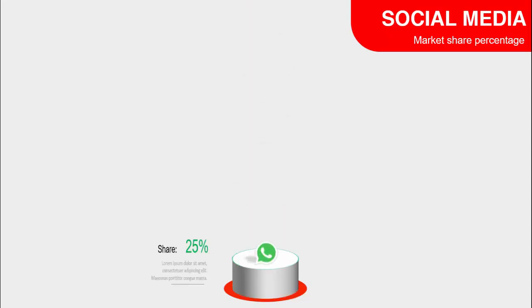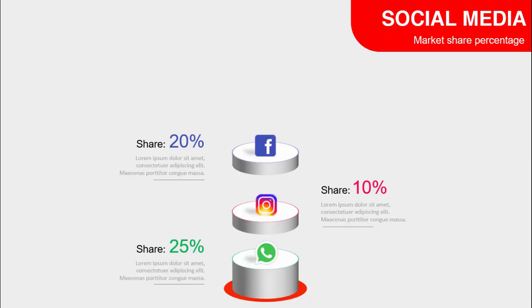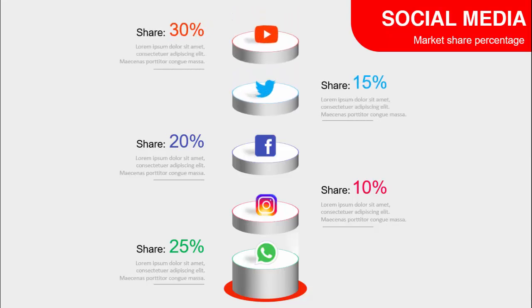In today's tutorial I'm going to show you how to create a PowerPoint template to show social media market share percentage. This is how the slide looks: when I click the first social media, which is WhatsApp, the market share percentage comes with 25 percent. When I click the next social media, Instagram, it shows 10 percent, then Facebook with 20 percent market share, and Twitter with 15 percent.